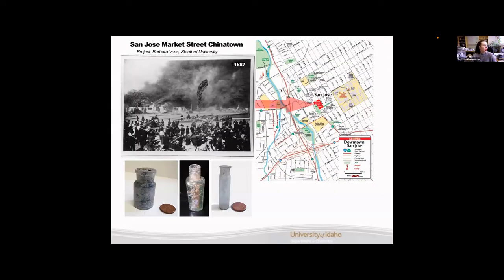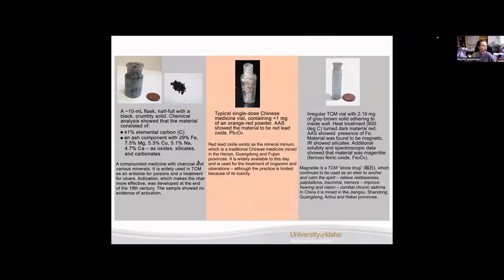Our very first site is going to be the San Jose Market Street Chinatown. You can see on this map this block where it was and this project was headed up by Barbara Voss. This right here is a historical picture of the site in 1887. Anti-Chinese sentiments ran very strongly in California during this time period and this fire was an act of arson and it did burn the majority of the Chinatown to the ground. Here are the three artifacts from this site that we analyzed.